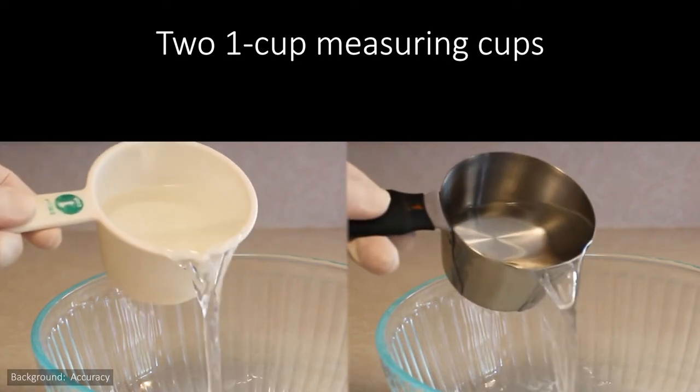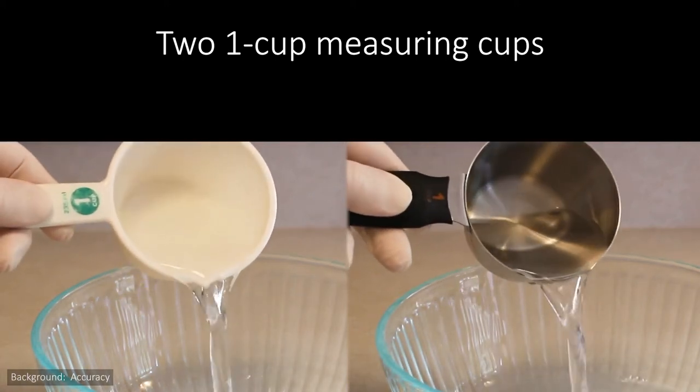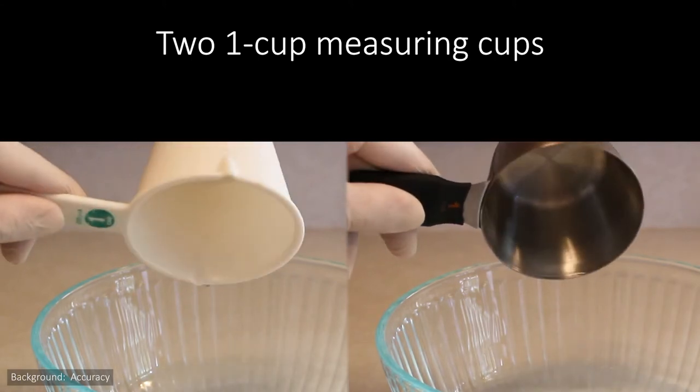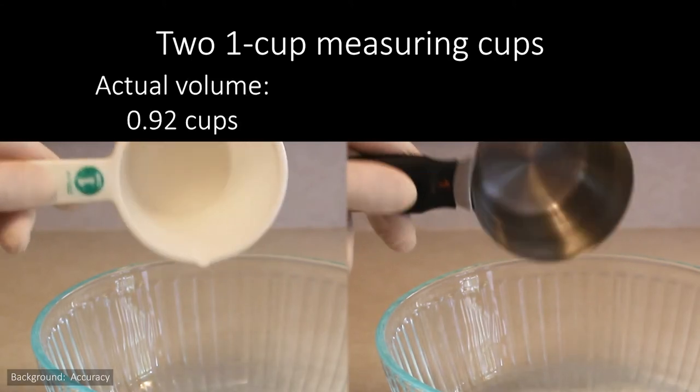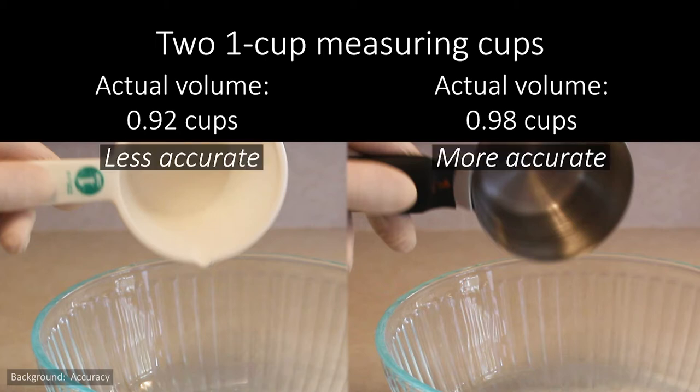Let's also say you had some method to determine the exact amount of water you measured out with each cup. This method tells you that you measured out 0.92 cups with one of the measuring cups and 0.98 cups with the other. Since the second cup came closer to measuring out what its label claims it does, that second cup is the more accurate of the two.